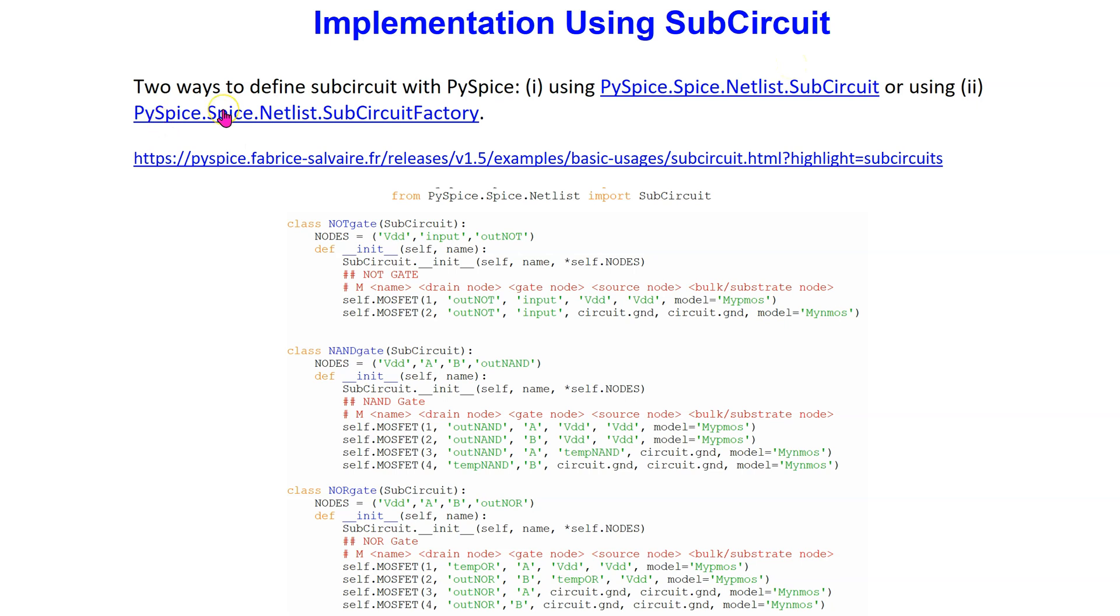There are two ways to define a sub-circuit in PySpice: using sub-circuit or using sub-circuit factory. These two methods are illustrated in this built-in example. In this video, we adopt the sub-circuit method. For this, we need to add this statement to the declarations.